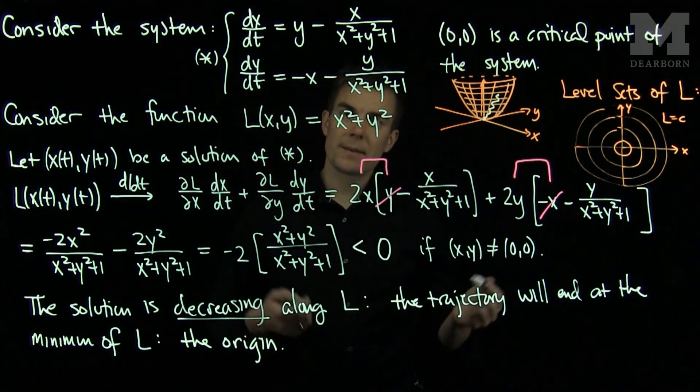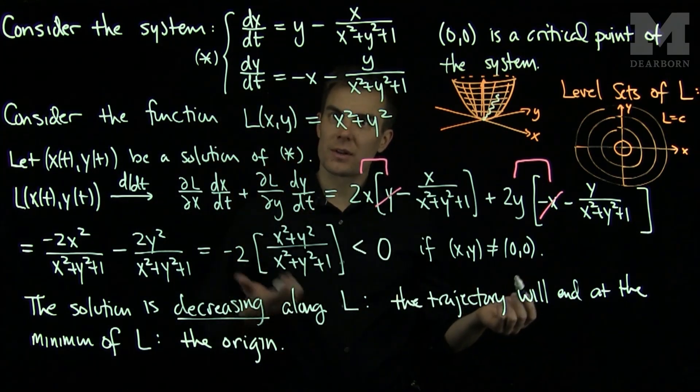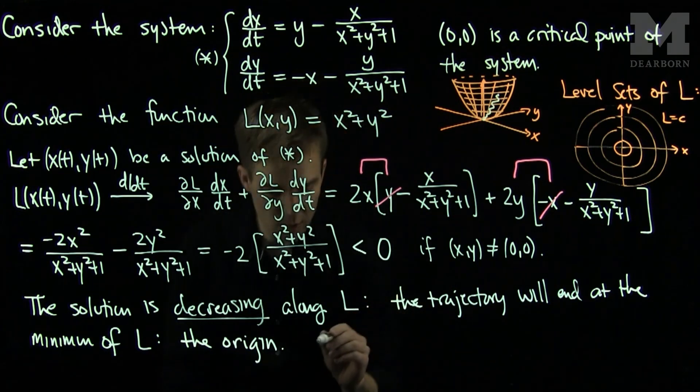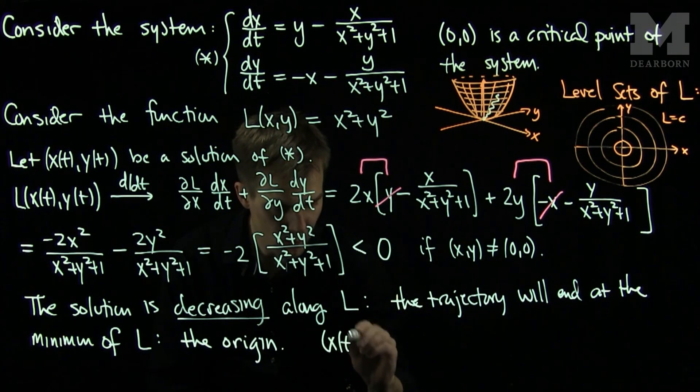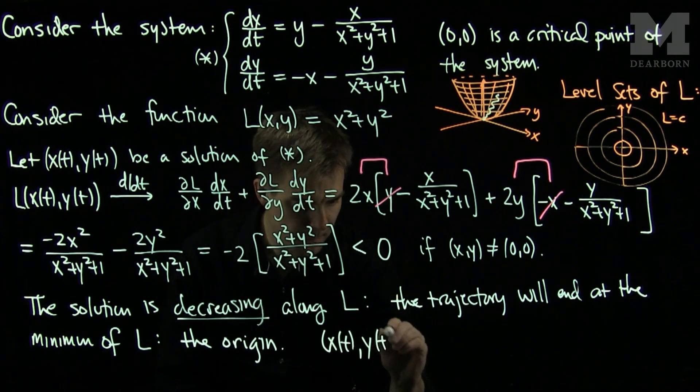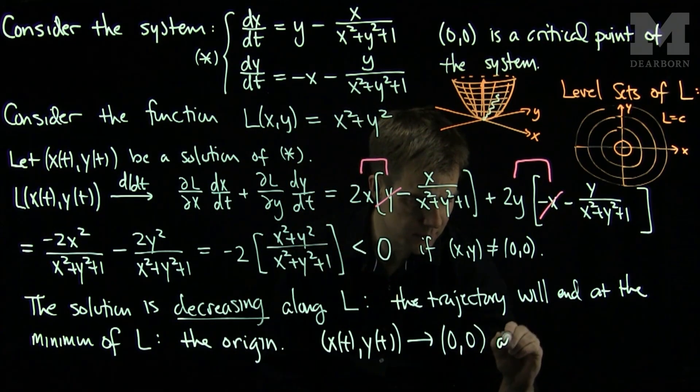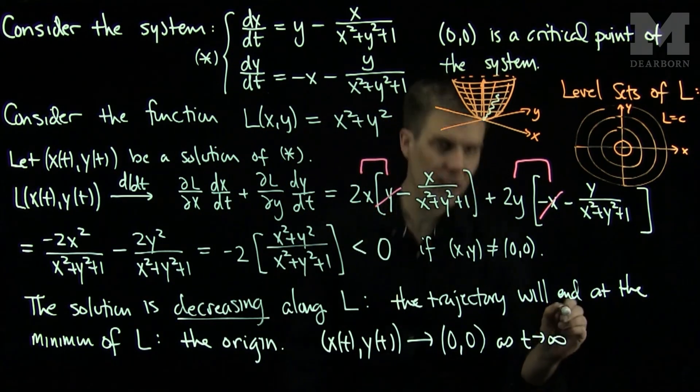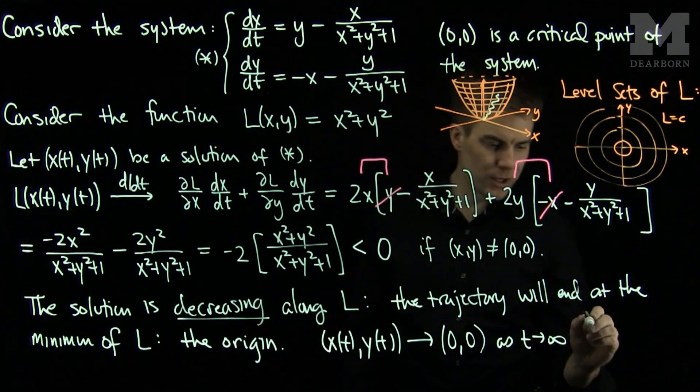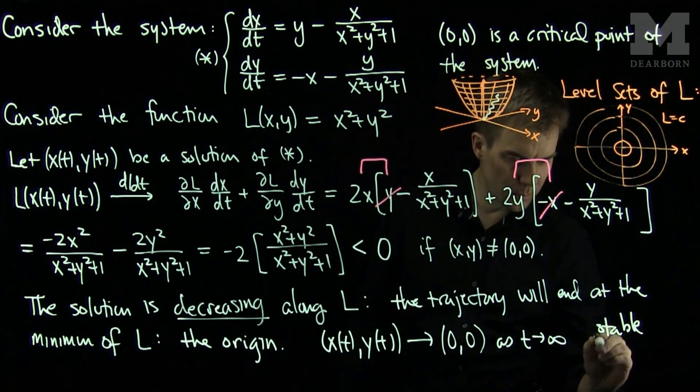Which shows that my solution tends to the origin as t goes to infinity. So our solution x(t), y(t) will approach the origin as t approaches infinity, which tells me that the origin is a stable equilibrium.